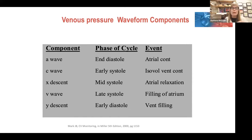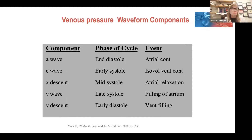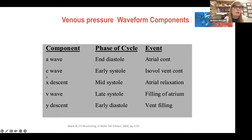I can go into the ECC right now with any CVP hooked up to pressure monitoring and identify normal A waves and V waves. The A wave is the pressure increase in the atria — right or left — due to atrial contraction. The C wave is a slight shift in pressure when the valve separates the ventricle from the atria — tricuspid on the right, mitral on the left — closes. If the valve is stenotic, it never opened and doesn't close, so you won't have a C wave.